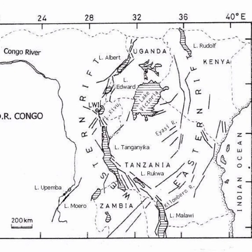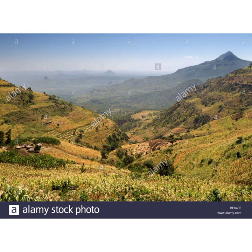The rift valley has two arms: the eastern arm and also the western arm. The eastern arm starts from Afar to Mozambique. It has quite a number of mountains which include Mount Kilimanjaro, Mount Nyiragongo, Mount Kenya, Mount Longonot, Menengai Crater, Mount Karisimbi, Mount Elgon, and also Mount Meru.